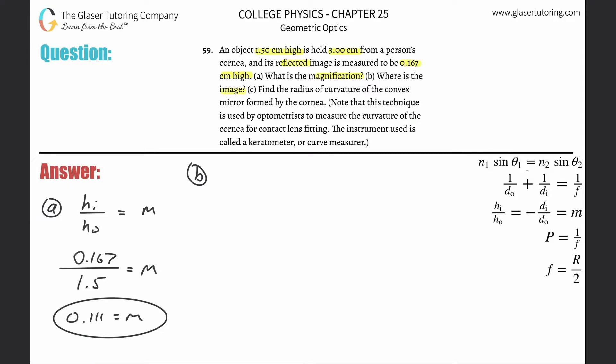Letter B asks where is the image. I know the magnification, and I know the object is held three centimeters from the person's cornea, so this is the actual object's distance, d_o. If I know d_o is three and the magnification is 0.111, then can I find the image distance? Sure.